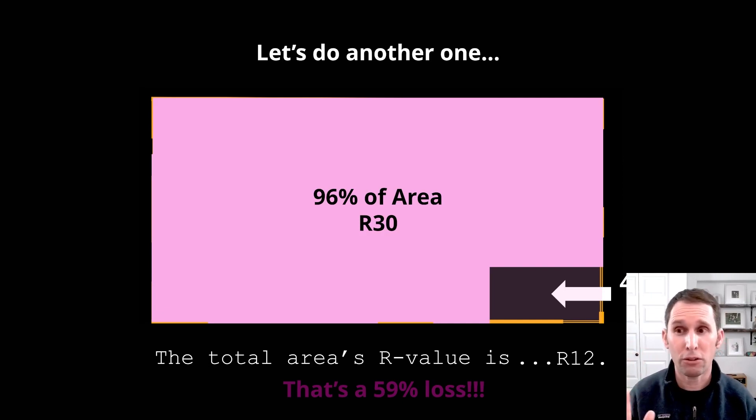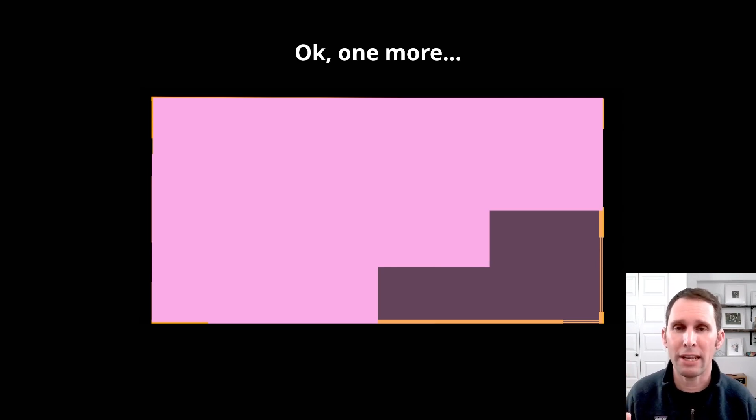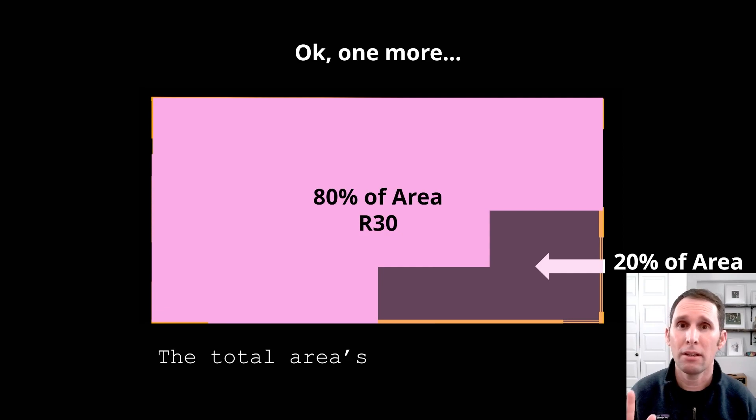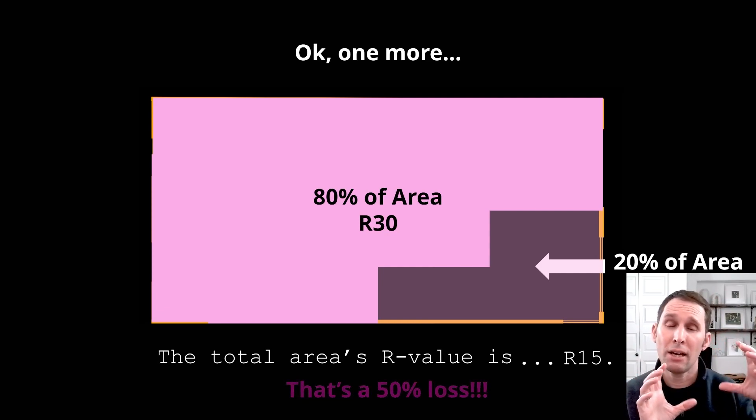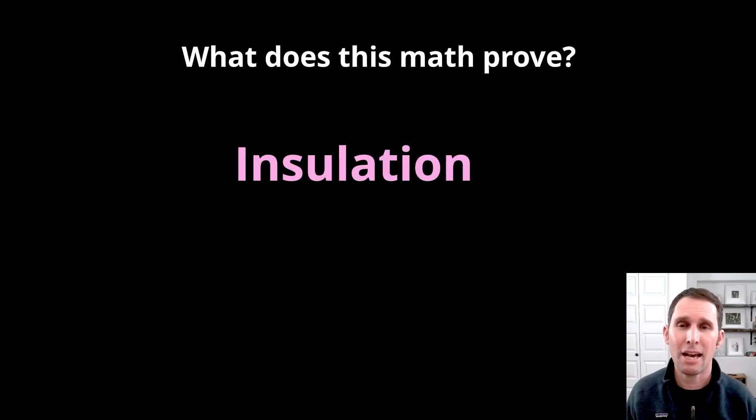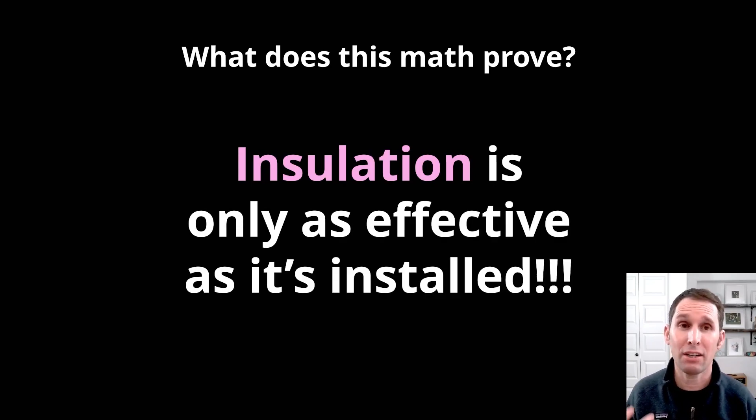Now, there's a really fancy formula where you use the inverses to come up with the additive of the different inverses. We're not going to go through that today, but just as an understanding of how important it is to make sure you have an effective and consistent insulation barrier. Let's look at one more example. Imagine you have an attic floor and 80% of the area is R30. 20% of the area is R5. There's a little bit of insulation. The total R-value of that area is actually R15. So, it's a 50% loss, even with only 20% having an R-value of R5. So, the sum of these examples and what this math really proves is that insulation is only as effective as it's installed. You have to have a consistent thermal barrier, a consistent amount of insulation for it to work well. So, when you start to ask the question, how much insulation do you need? It's really not just important to see how much you need. It's really important to see how well you need it to be installed.